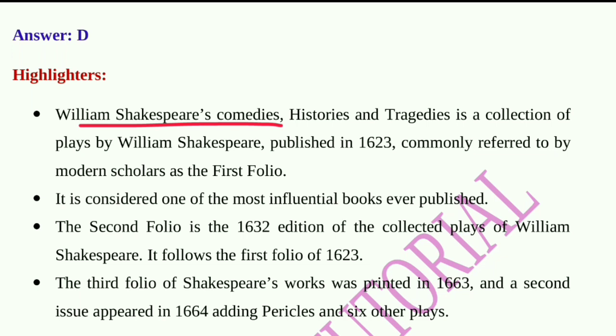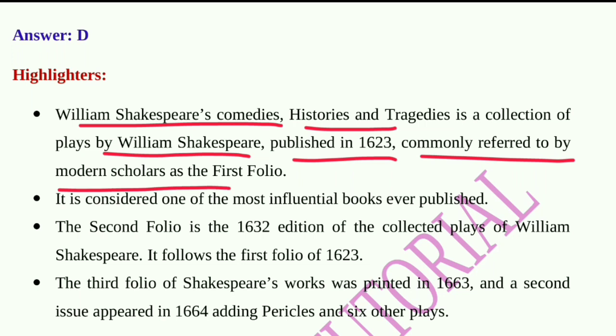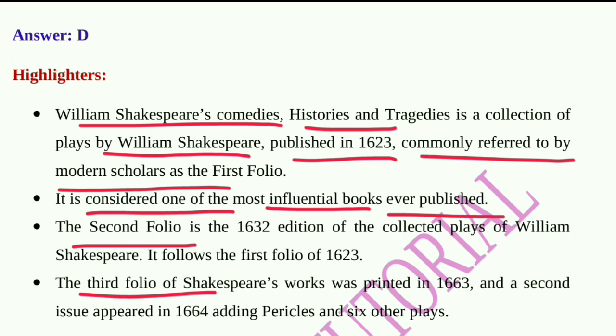Question number eight: The First Folio edition of Shakespeare's plays was printed in — 1620, 1616, 1625, or 1623? The correct answer is 1623. Shakespeare's Comedies, Histories and Tragedies was published in 1623 and is commonly referred to as the First Folio — considered one of the most influential books ever published. The Second Folio is the 1632 edition; the Third Folio was printed in 1663, with a second issue in 1664 adding Pericles and six other plays.